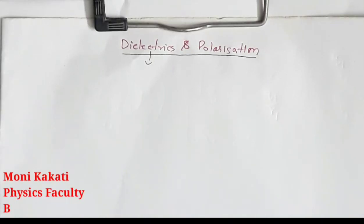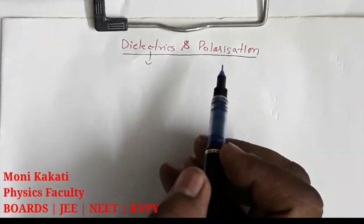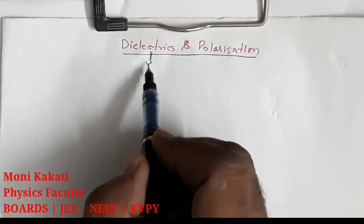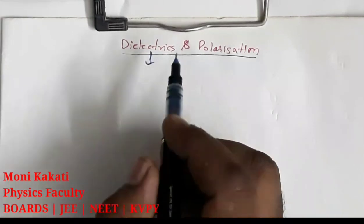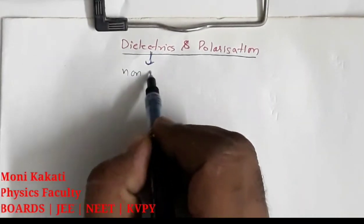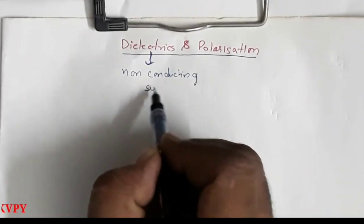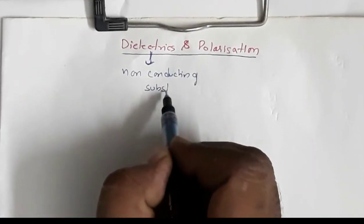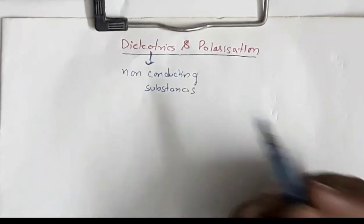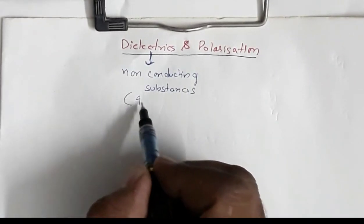Hello everyone, welcome to my channel. In this video we are going to discuss the topic dielectrics and polarization. Dielectrics are basically non-conducting substances, or poorly conducting substances — we can call them insulators also.